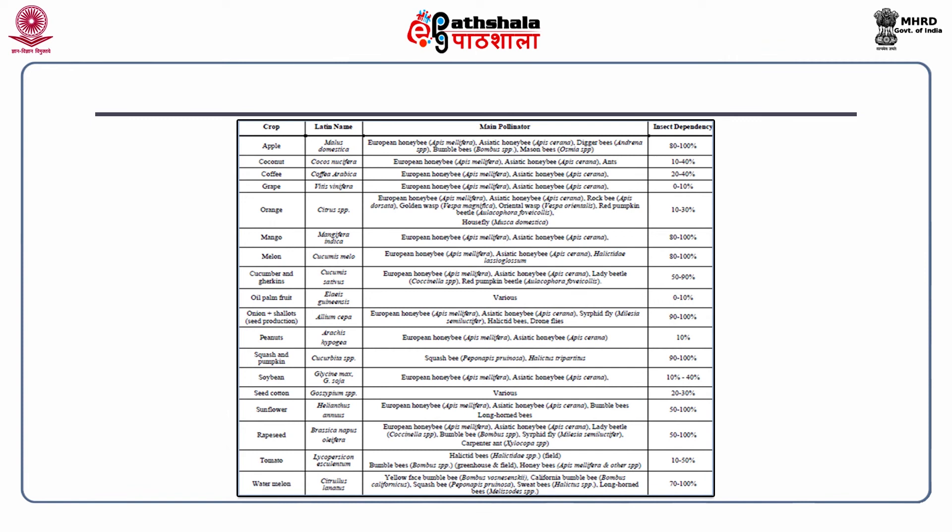The current slide depicts crops mainly pollinated by various species of bees, including apple, coconut, coffee, grapes, orange, mango, melon, cucumber, oil palm, peanuts, squash and pumpkin, soya bean, seed cotton, sunflower, rapeseed, tomato, watermelon, and others. All these fruits and vegetables are actually pollinated by various honey bees including European honey bee, Asiatic honey bee and various other insects.